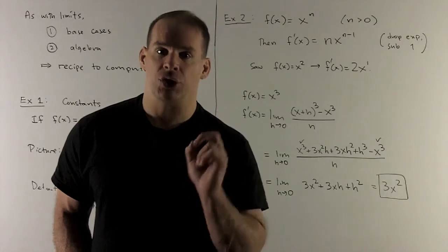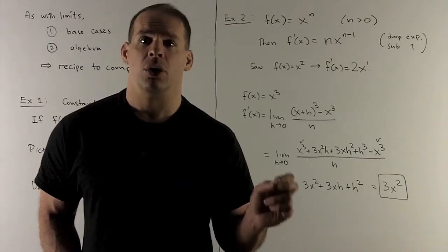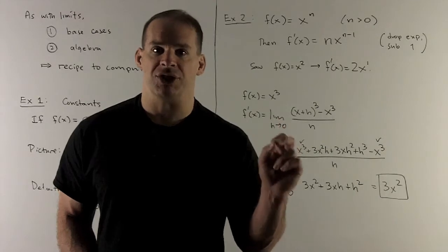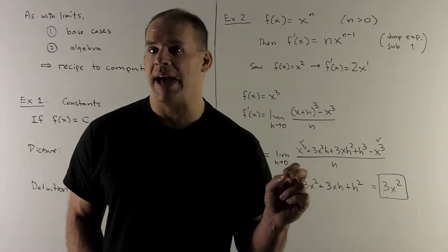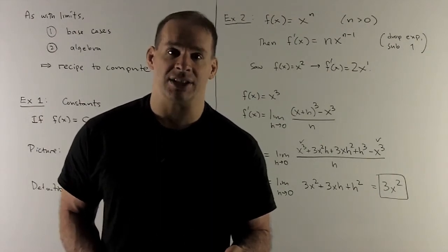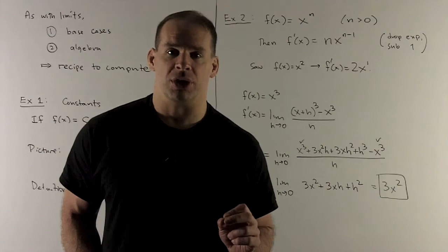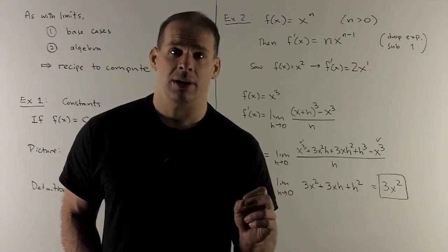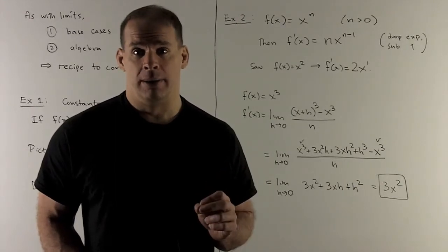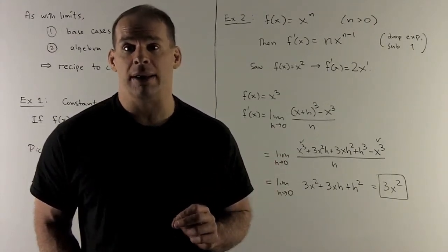Let's try something new: x cubed. We set up our limit gadget: f of x plus h minus f of x over h. So f of x plus h is x plus h cubed. Expanding using the binomial theorem or Pascal's triangle gives x cubed plus 3x squared h plus 3x h squared plus h cubed. We subtract off x cubed, leaving 3x squared h plus 3x h squared plus h cubed, all over h. Dividing by h gives 3x squared plus 3x h plus h squared. Taking the limit as h goes to zero leaves us with 3x squared, which agrees with the formula: bring down 3 from x cubed, giving 3 times x to the 3 minus 1, which is x squared.